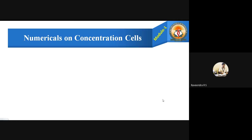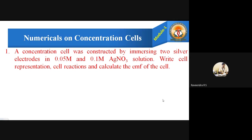Let's go to the first problem. A concentration cell was constructed by immersing two silver electrodes in 0.05 molar and 0.1 molar silver nitrate solutions. Write the cell representation, cell reactions, and calculate the EMF of the cell. It's a very simple problem, usually carrying four or five marks. Let us try to understand what they have given and what we have to do here.